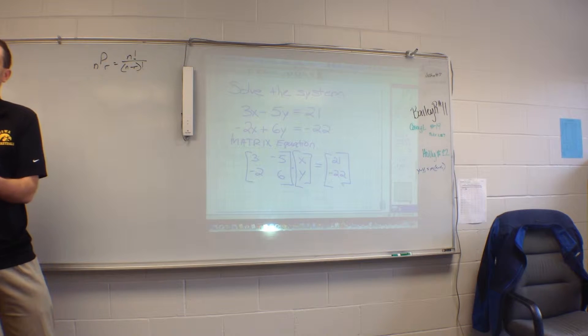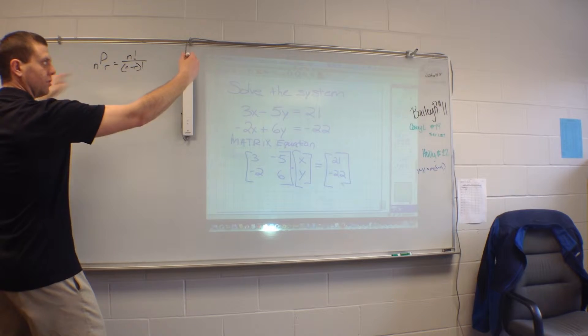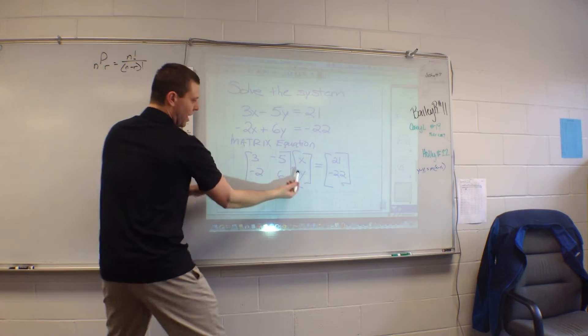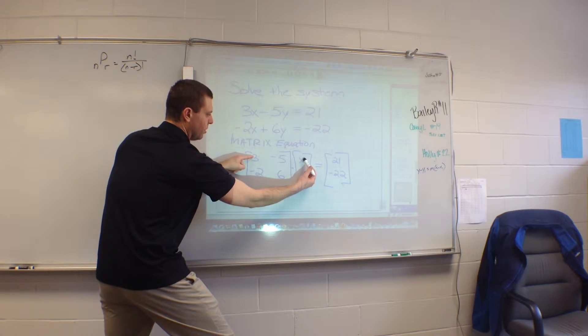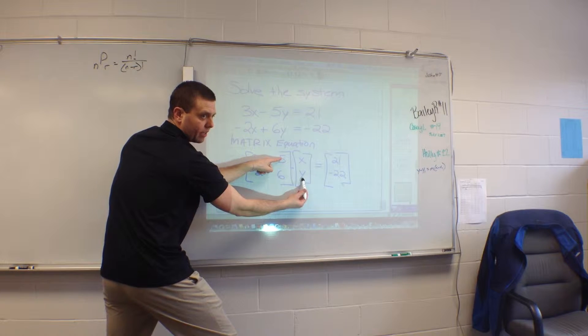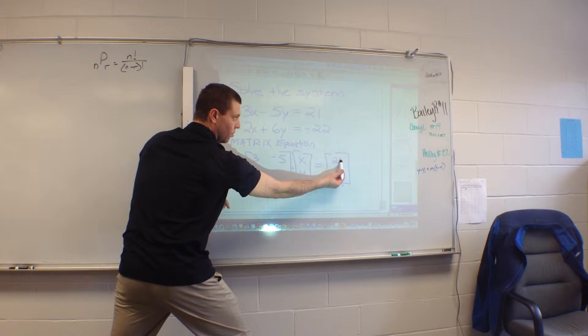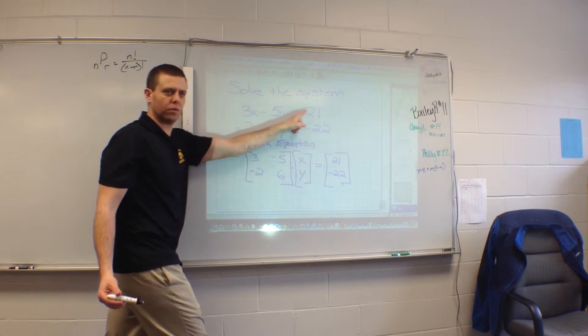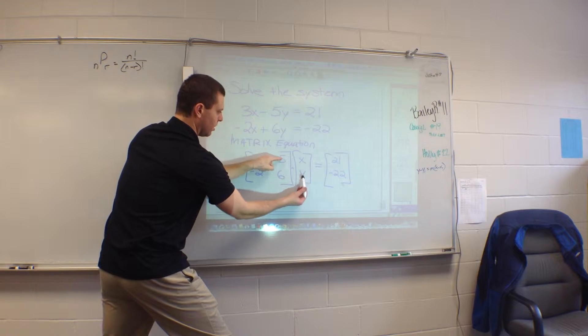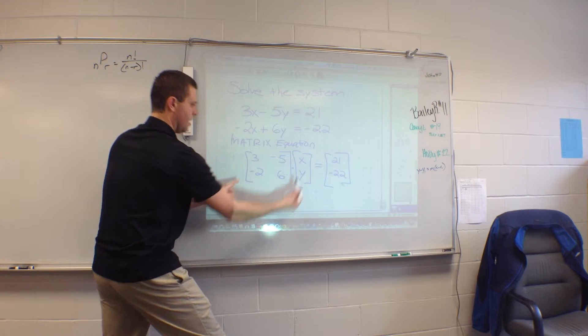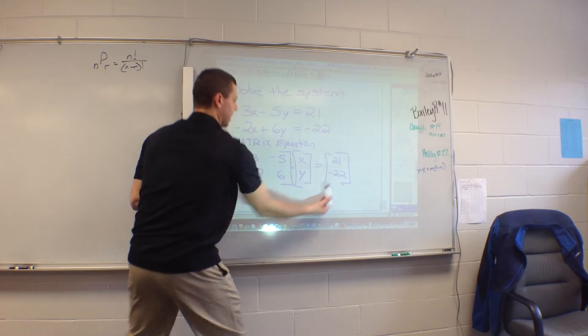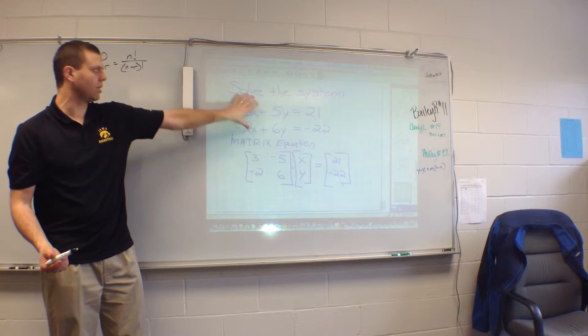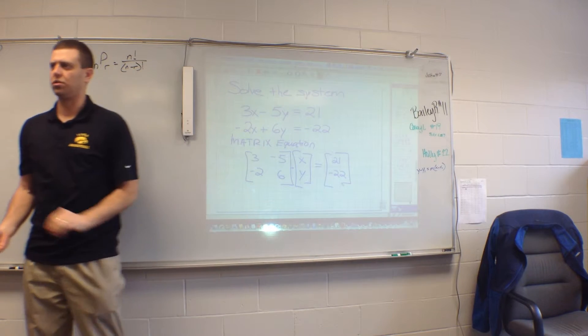You know that when you multiply matrices together, you go across the row and down the column like this. When I multiply these two matrices together, I have to take 3 times x plus negative 5 times y, and that will equal 21. Well, that's exactly what this says right up here: 3x plus negative 5 times y equals 21. Negative 2x plus 6y equals negative 22. So this matrix equation right here is saying the exact same thing as this algebraic system of equations right here.